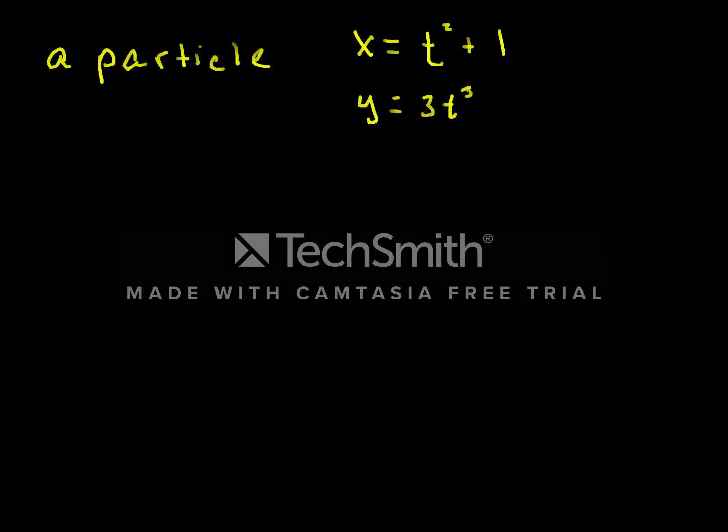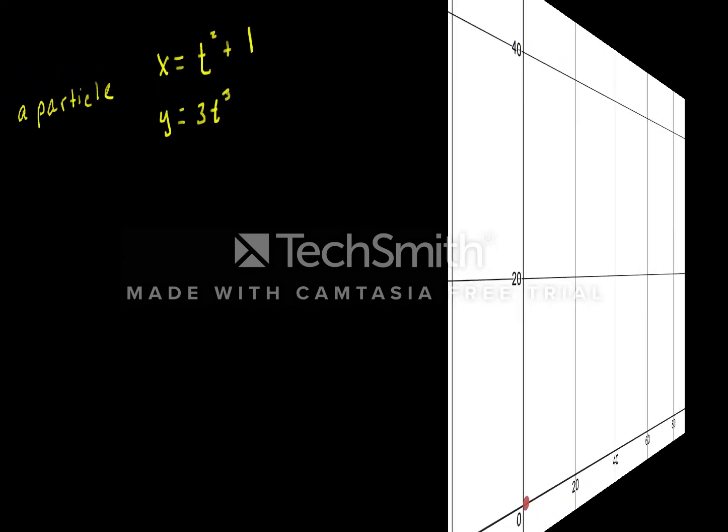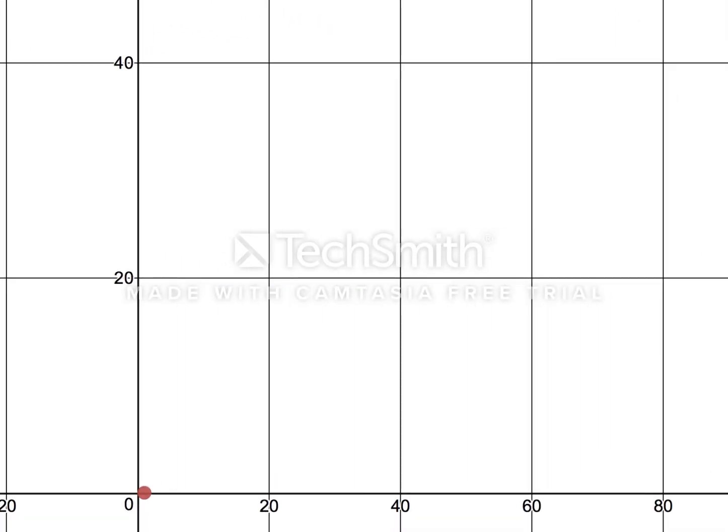So before we start this key problem, I just want to explore or remind you how to think about parametric equations. So we'll flip over to the graph in Desmos and look at a particle whose x-coordinate is equal to t² + 1, and y-coordinate is equal to 3t³.